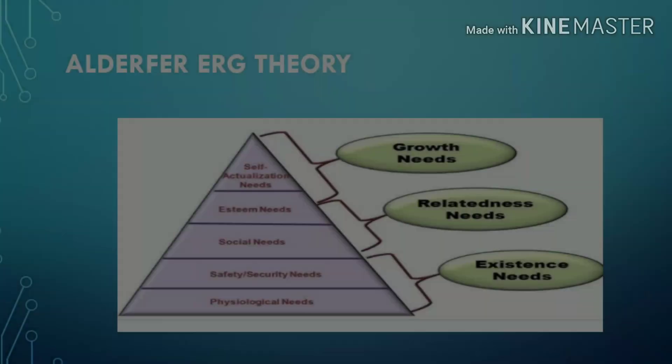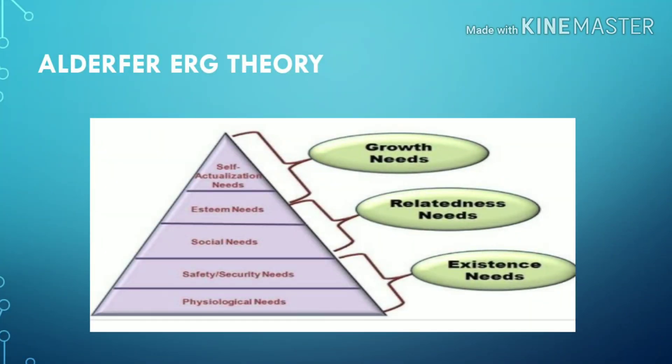The next theory is Alderfer's ERG Theory. ERG means Existence, Relatedness, and Growth. There is a link between Maslow's Need Hierarchy Theory and ERG Theory: physiological needs and safety needs comprise Existence; social needs and esteem needs comprise Relatedness; and esteem needs and self-actualization needs comprise Growth.